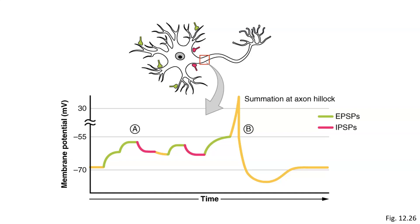We can have situations where EPSPs and IPSPs happen at similar times. These two postsynaptic potentials cancel each other out, meaning that the action potential was prevented — it doesn't reach our threshold value of negative 55 millivolts. However, if the excitatory neurons are stimulated enough to cause sufficient EPSPs, we hit the threshold membrane potential, meaning an action potential will fire. The message is propagated down the axon and continues onward. We call these events where EPSPs and IPSPs combine together: summation.